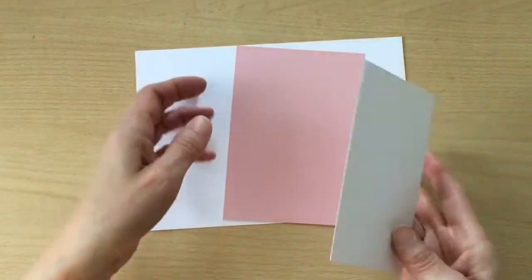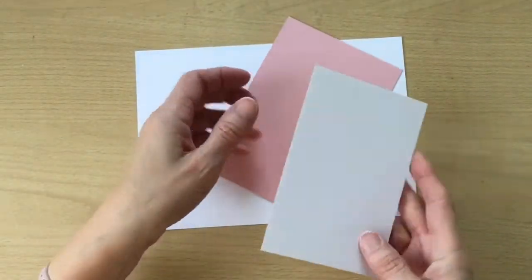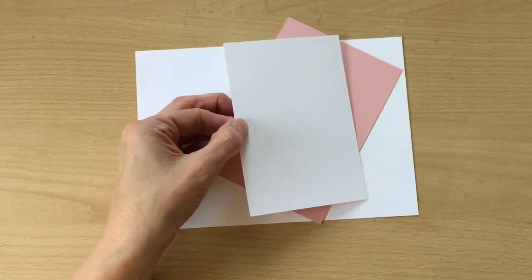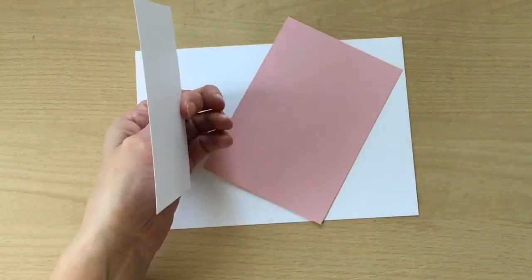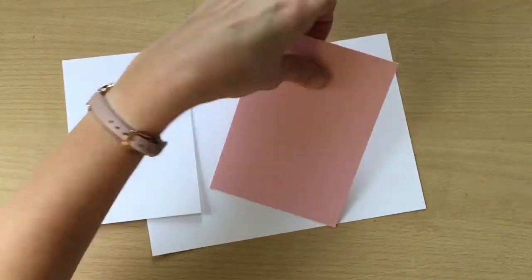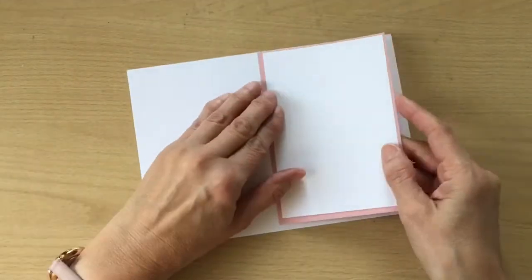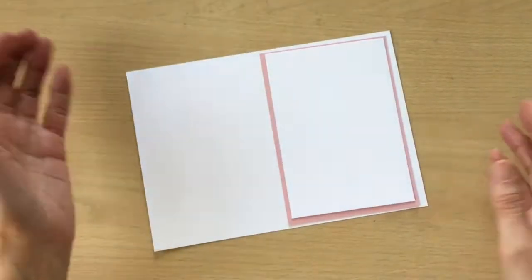Also I have a piece of Blushing Bride and another piece of Basic White but this is the normal Basic White and these are cut at 9.5 by 13.9 and Blushing Bride is 10 by 14.4 and they're just going to layer on and then that's going to layer on to the card base.